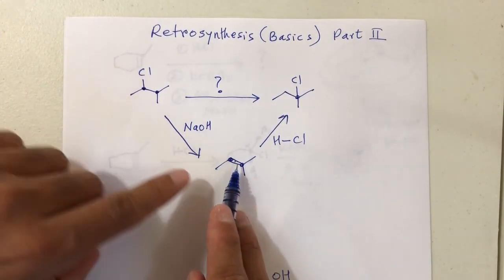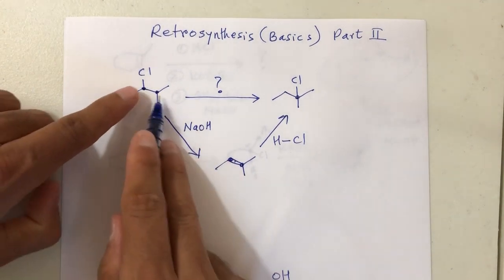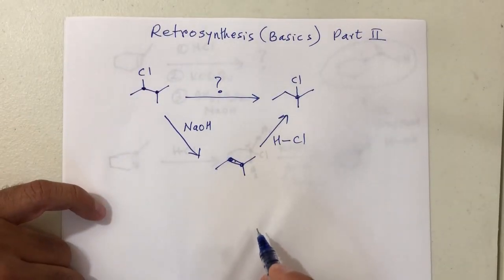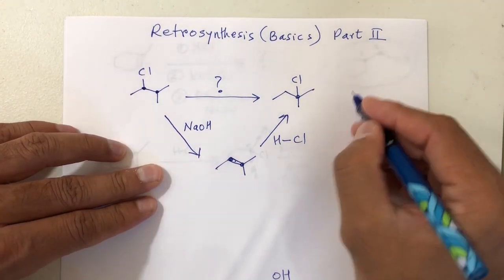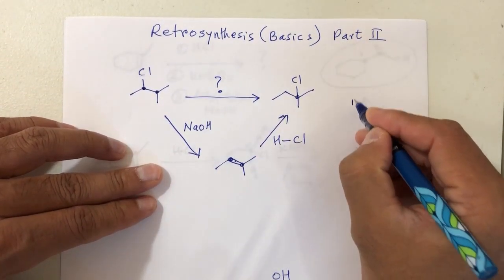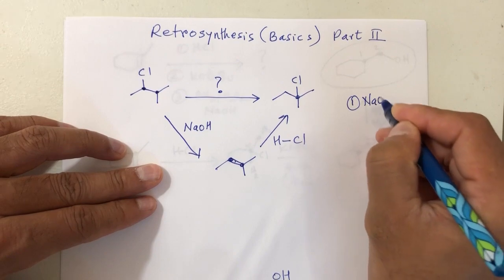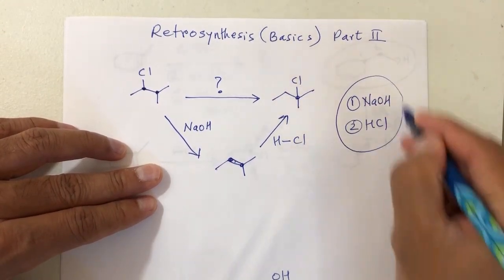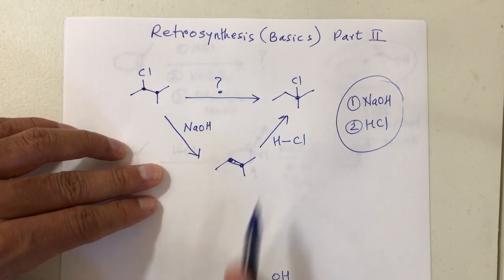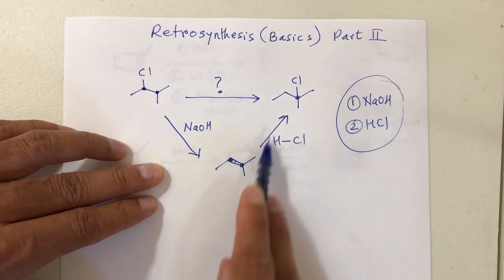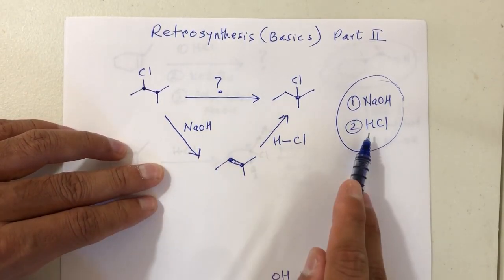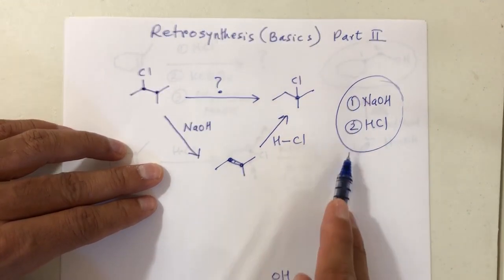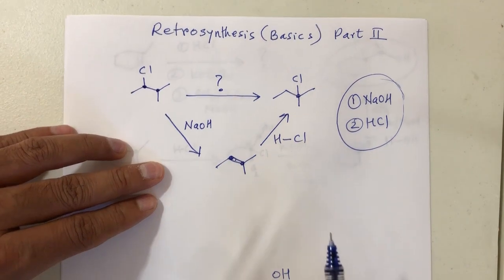Elimination will give you a double bond at the right place, and then adding HCl will get you the required product. So how do you write the synthesis? Number one will be NaOH and number two will be HCl — that's the answer. That's the process, and that's how you write down the sequence: what goes first, what goes second.